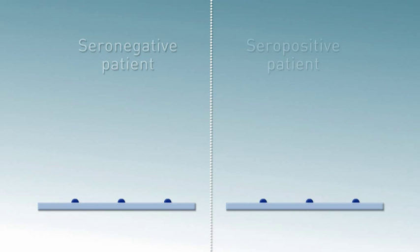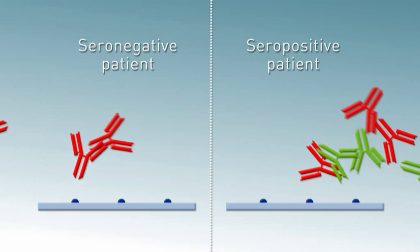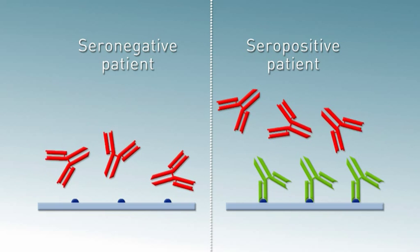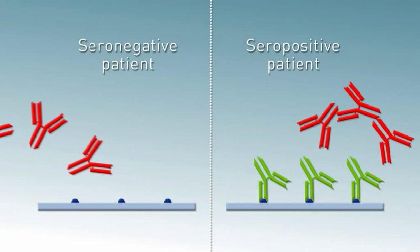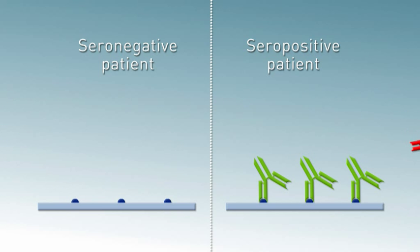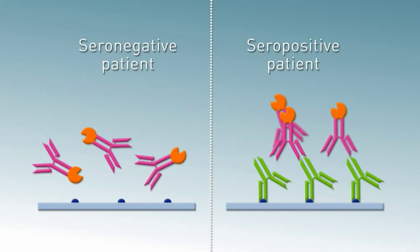The strips are incubated first with diluted patient sera. Human autoantibodies, if present, bind to the corresponding specific antigen on the strip membrane. Unbound or excess antibodies are removed by a washing step.